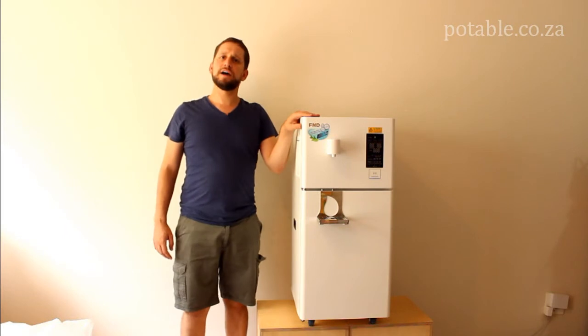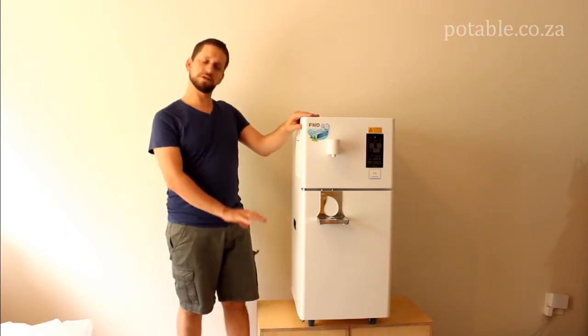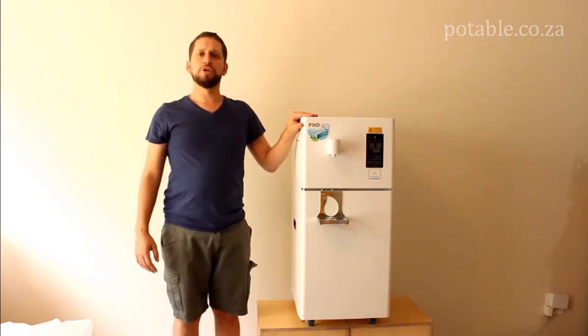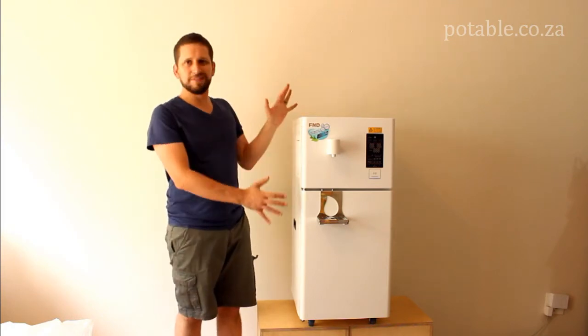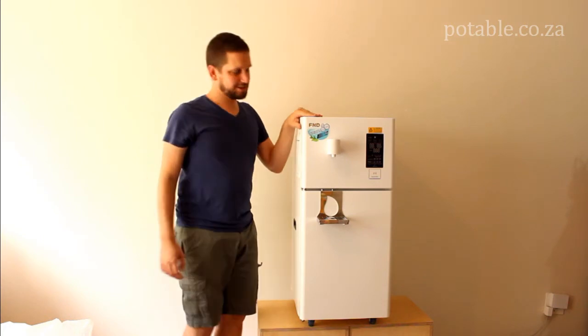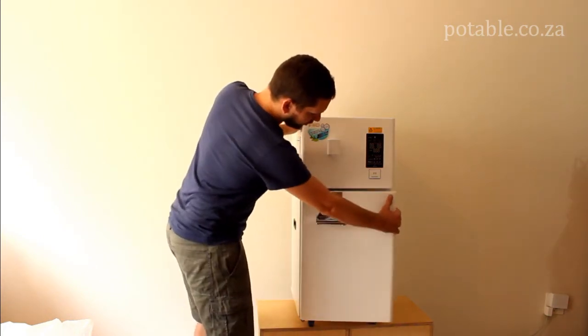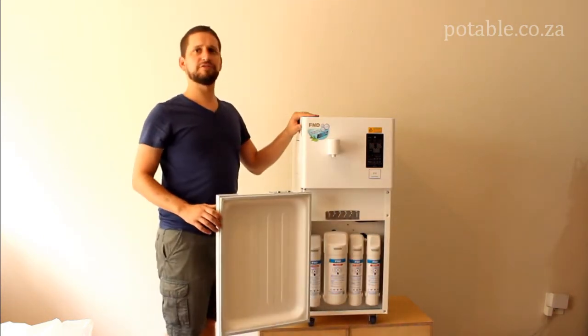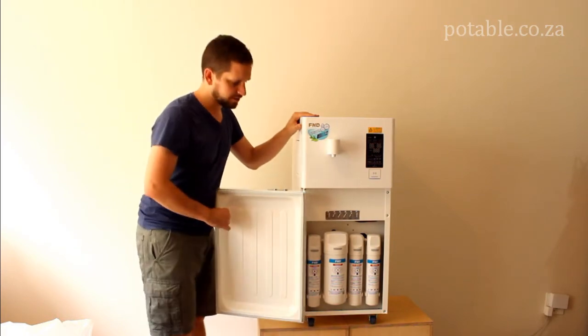I have lifted up the machine on some wooden units so that you can see more effectively. You will see that the unit looks like a small fridge but that is not what it is. If you open this bottom part up you will notice all the various filters that are within the unit.